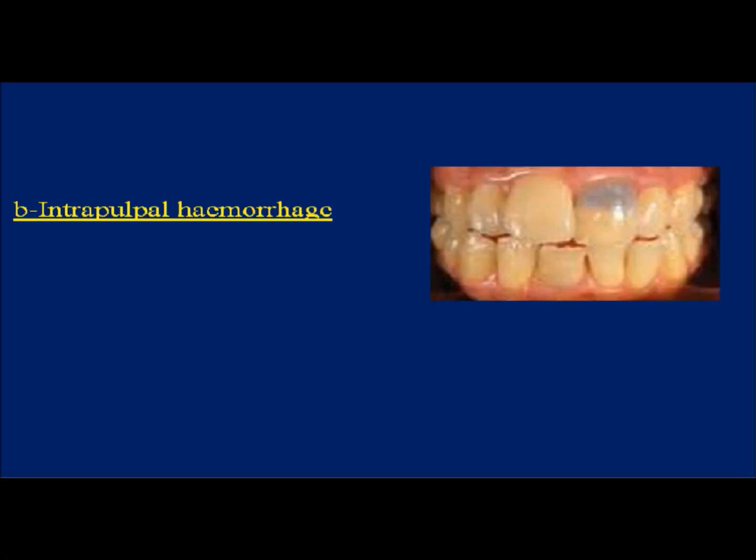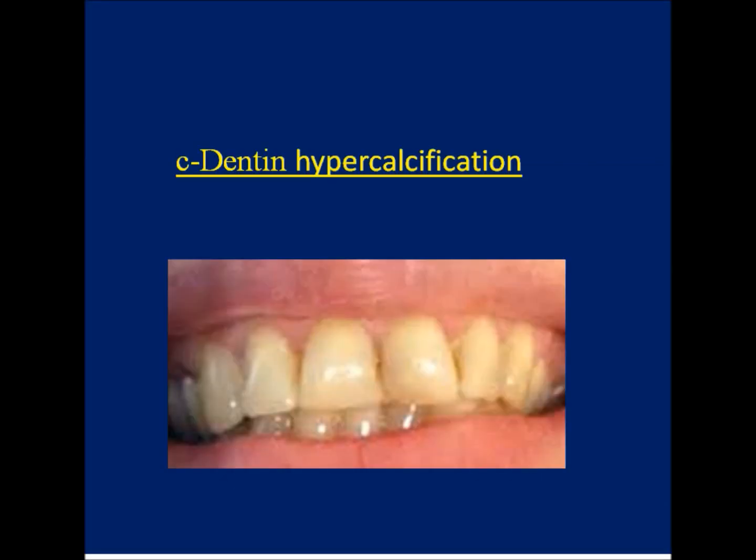B. Intrapalpal hemorrhage. When a tooth is subjected to trauma, hemorrhage occurs in the pulp. Erythrocytes undergo hemolysis; iron sulfide enters the dentinal tubules and discolors the dentine. This discoloration is difficult to bleach and may be reversible. Treatment is by intracanal bleaching.